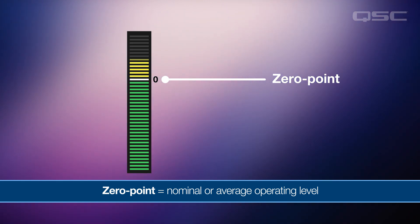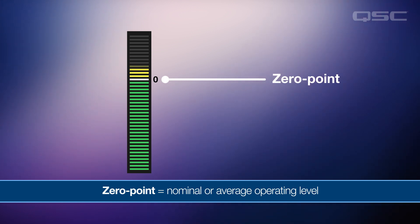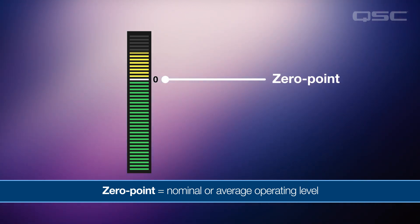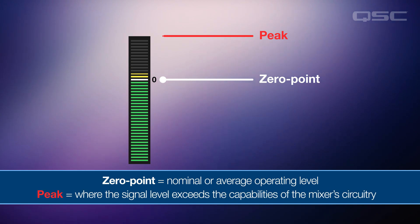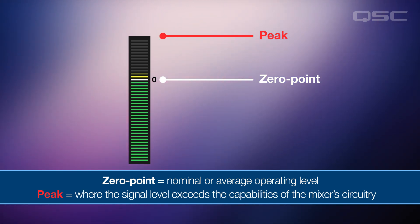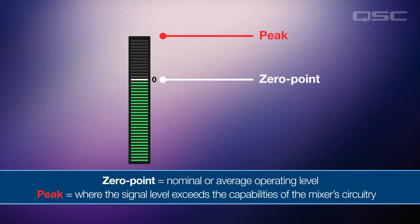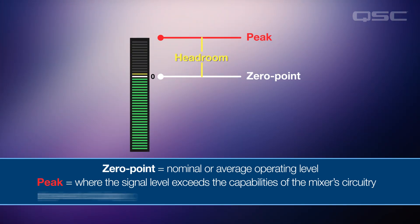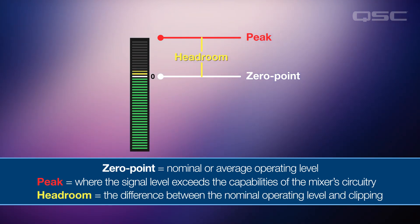Think of nominal as meaning average. When your signal is at its average level, it should be sitting right around zero on the meter. At the top of the mixer we hit peak, going into the red. That is the point at which the signal level is going to exceed the capabilities of the mixer's circuitry and clip. Between zero and peak is headroom, and that's where the dynamic peaks in your signal should sit.